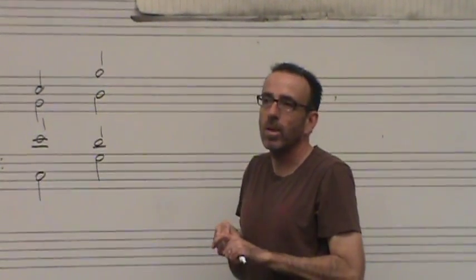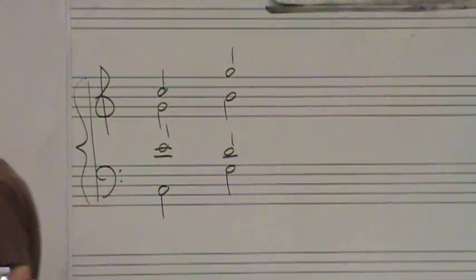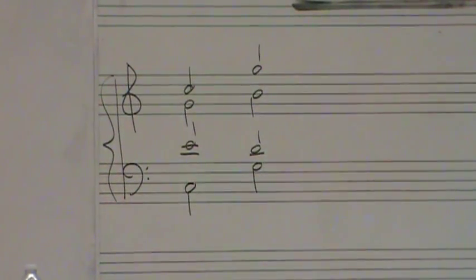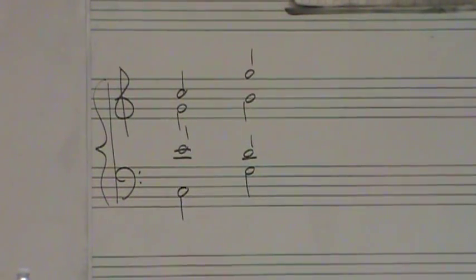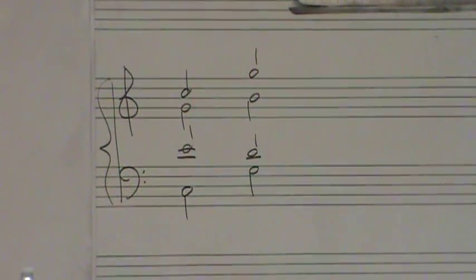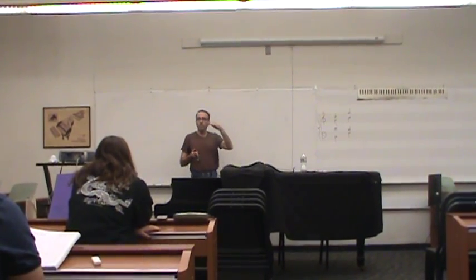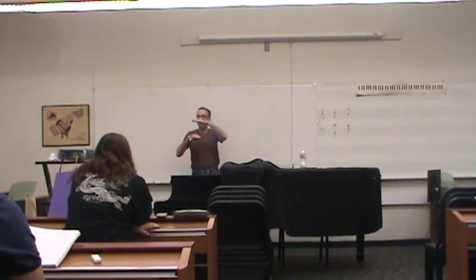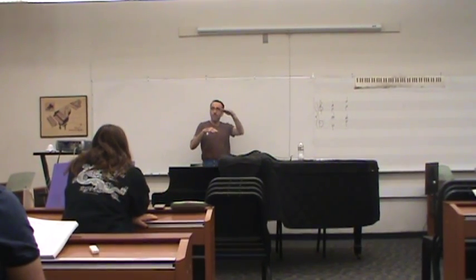So you avoid parallel octaves because it tends to marry the voices together. It really sounds, when you've got octaves moving around, it sounds like you're just doubling the same voice. And you'll see in orchestra scores, the cellos and the basses will often play in octaves. But it's really the cello line is the main line.